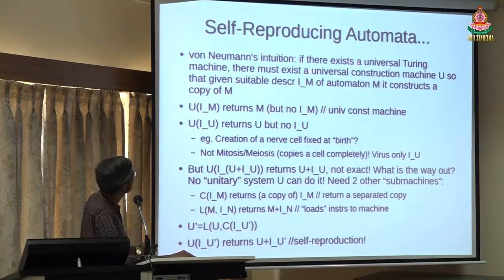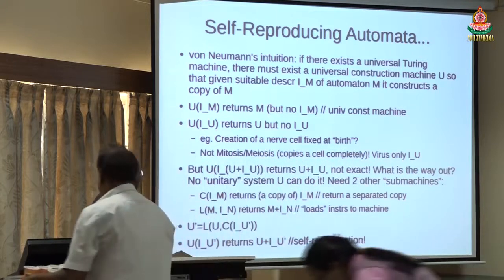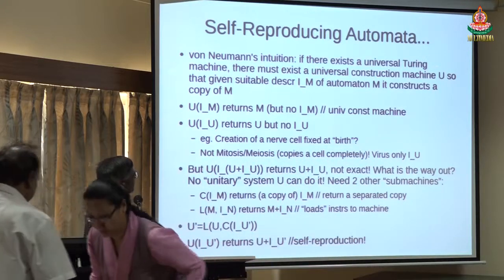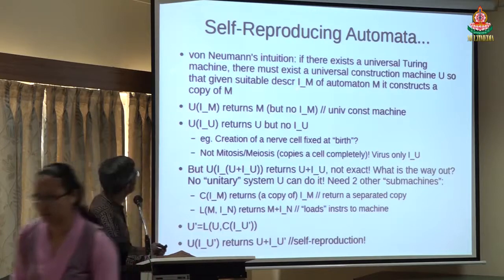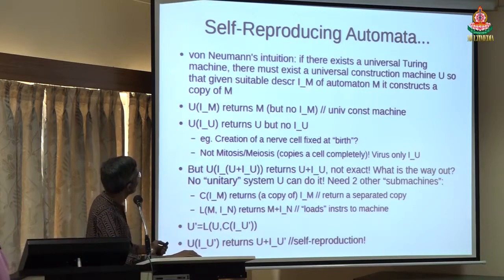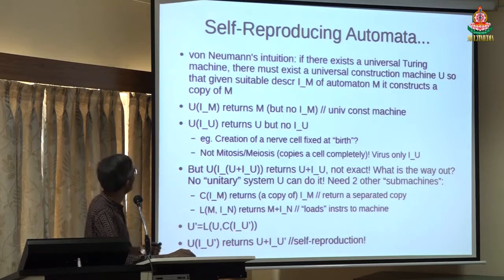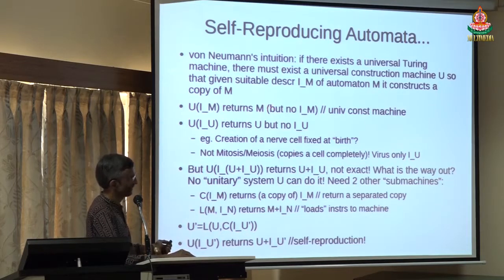Von Neumann decided to posit that a universal construction machine exists. Given a suitable description — the instructions for constructing an automaton M — the universal construction machine constructs a copy of M. Think of a cell: you have a cell and it creates another cell, so there has to be some description of that cell. Mathematically, you can represent it as: the universal construction machine takes a description and returns the object. But interestingly, it does not reproduce the instructions itself.